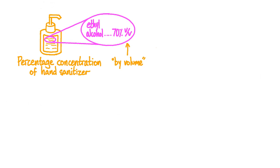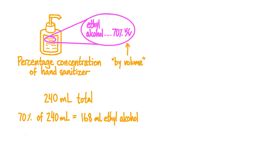What does this mean? The V/V means that this percentage concentration is by volume — out of the total volume of hand sanitizer in the bottle, 70% of the volume is ethyl alcohol. For example, a small bottle of hand sanitizer that you might see in a bathroom or on a desk would be about 240 milliliters. Since the solution is 70% ethyl alcohol by volume, the company used 168 milliliters of ethyl alcohol to make this bottle — because 70% of 240 is 168.